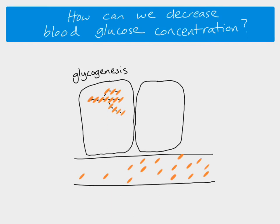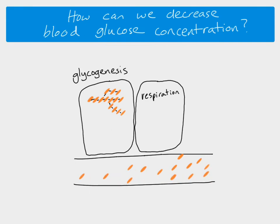This process of adding glucose onto glycogen is called glycogenesis, and it can occur in liver cells and muscle cells. Another process that uses blood glucose is respiration. Increasing the rate of respiration means more glucose is taken from the blood into cells. Both glycogenesis and increased respiration decrease blood glucose concentration, and this is what insulin causes.